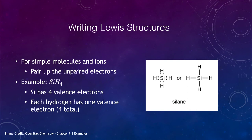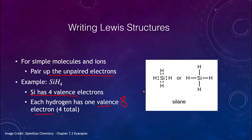Now let's look at how to write Lewis structures for simple molecules, starting with silane. We pair up the unpaired electrons. Silicon has four valence electrons and needs four more. Each hydrogen has one valence electron — four hydrogens give four. So four plus four gives us the eight electrons needed to fill silicon's valence shell. Each hydrogen shares one electron with silicon, so they are all bonded in single bonds. Now each hydrogen has two electrons in its valence shell, and silicon has eight, following the octet rule.